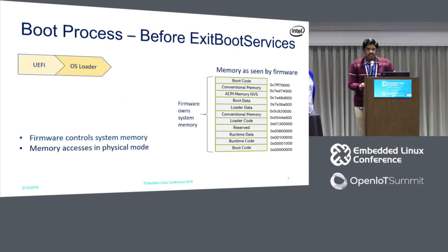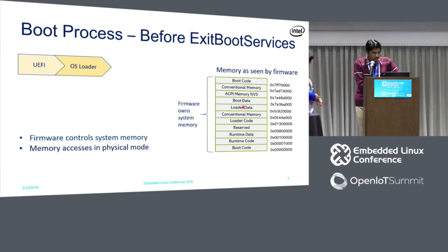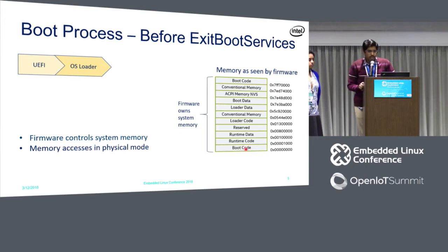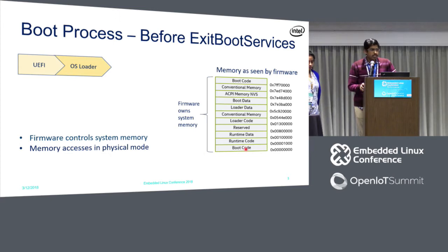Continuing our story: when you power on a system, the memory map is divided into many regions — it's an array of structures, each describing a part of memory with a base address, size, and memory type. The important point is that when the platform is booting, all the memory is owned by firmware. Firmware has full ownership and can read, write, allocate pages to the OS loader, or free pages. Platform firmware completely assumes ownership of system memory.